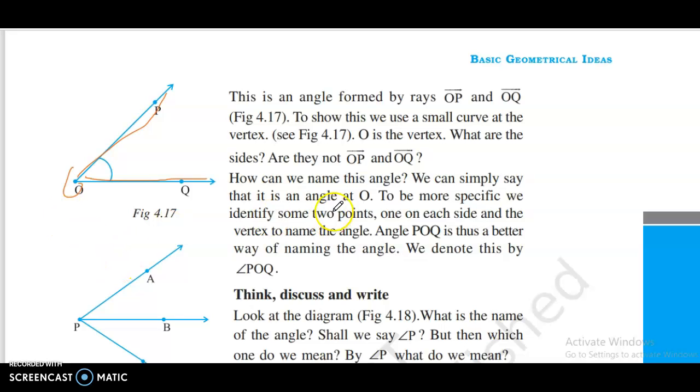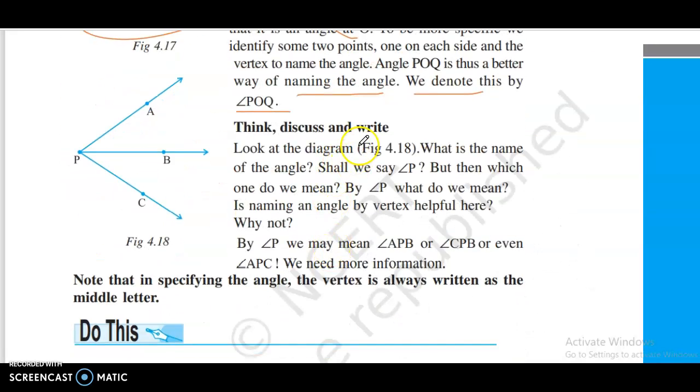How can we name this angle? We can simply say that it is angle O. To be more specific, we identify two points, a point on each side, and with the vertex name the angle. The angle is POQ. This is a better way of naming the angle. We denote this by angle POQ.